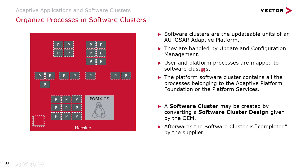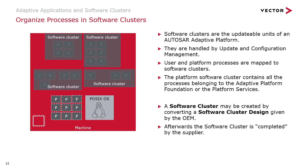Now let's have a look at the last definition element of an application: the software cluster. A software cluster is the updatable unit of an AUTOSAR Adaptive platform. Since we want to update single applications, it makes sense to put their processes in relation to a software cluster. Note that the software cluster itself is just an abstract view of processes belonging together. Additionally, AUTOSAR knows a so-called software cluster design, which is usually the starting point for developing applications. The design may be provided by the OEM to the supplier, who then adds all the internals like the separation into processes and the business logic.